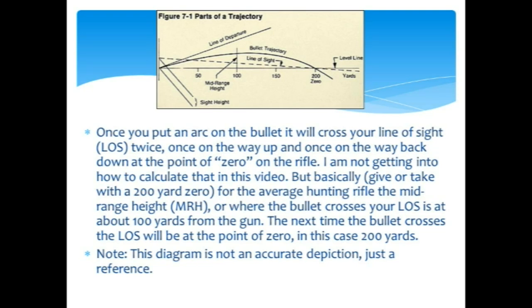Once you put that arc on a bullet, it will cross your line of sight, which, remember when I said line of sight's from your eye to the point you're looking at, twice with an arc. Once on the way up, and once on the way back down. That way back down, where it lands on the way back down, is a zero on a rifle. I'm not getting into how to calculate that. But, basically, give or take, if you had a 200 yard zero, as we do in this figure, with the average hunting rifle, and the average mid-range height on that, would cross your line of sight at about 100 yards. So, on the way up, it's going to cross at 100 yards. On the way back down, it's going to land at 200 yards. That is your point of zero.